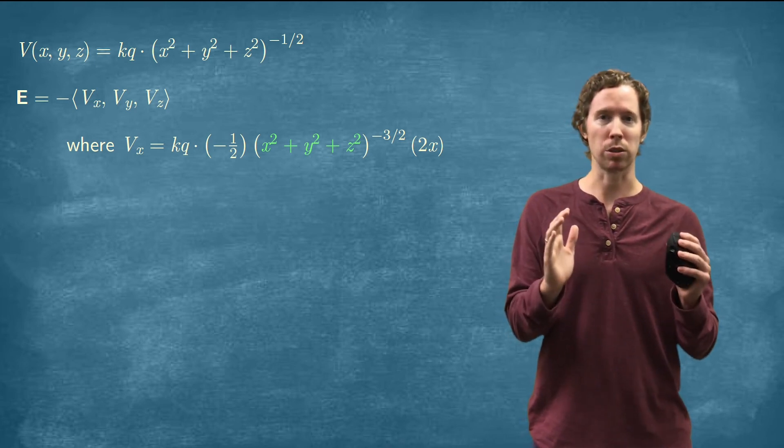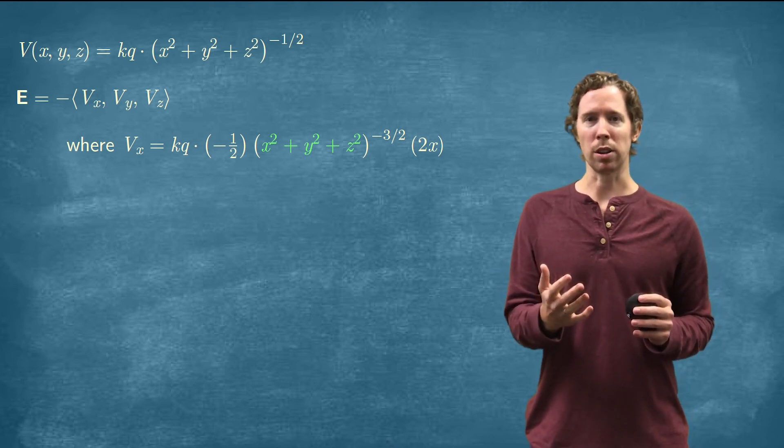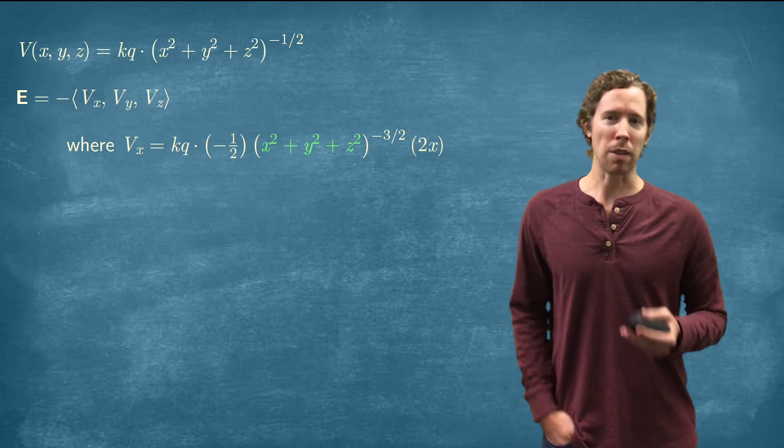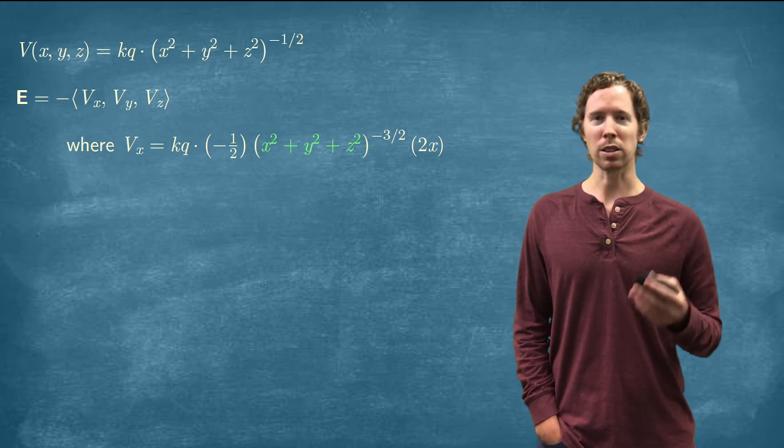But the derivative is the partial derivative with respect to X. Y and Z are considered to be constants here, so that partial derivative is just two times X. And I've highlighted the X squared plus Y squared plus Z squared part here because that's R squared.